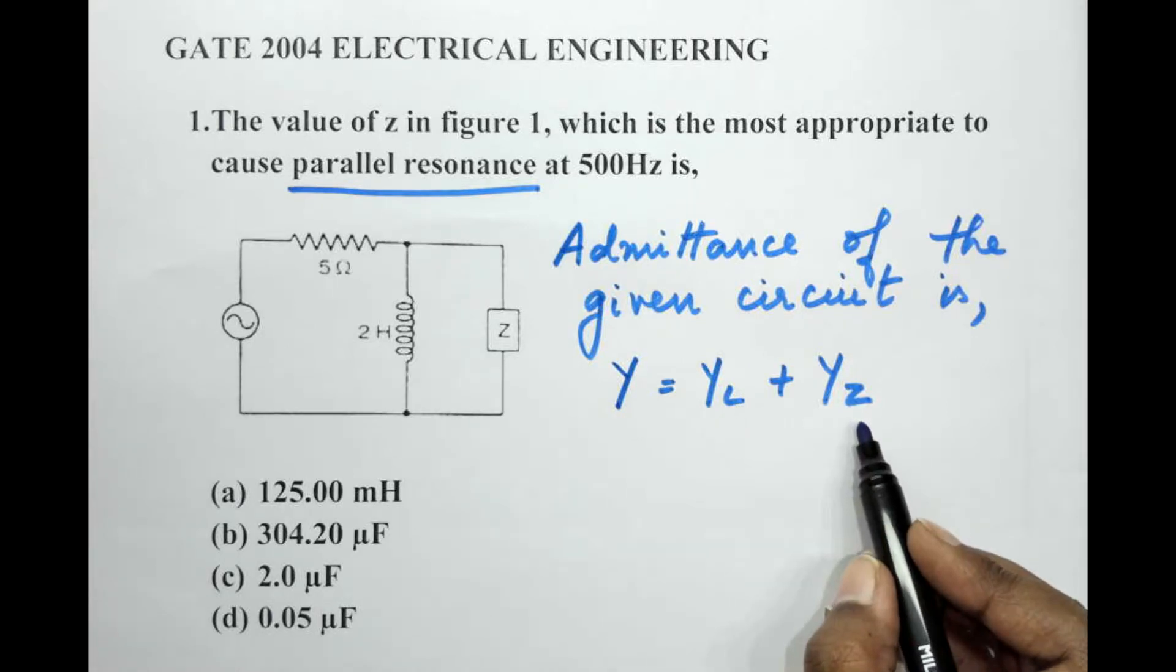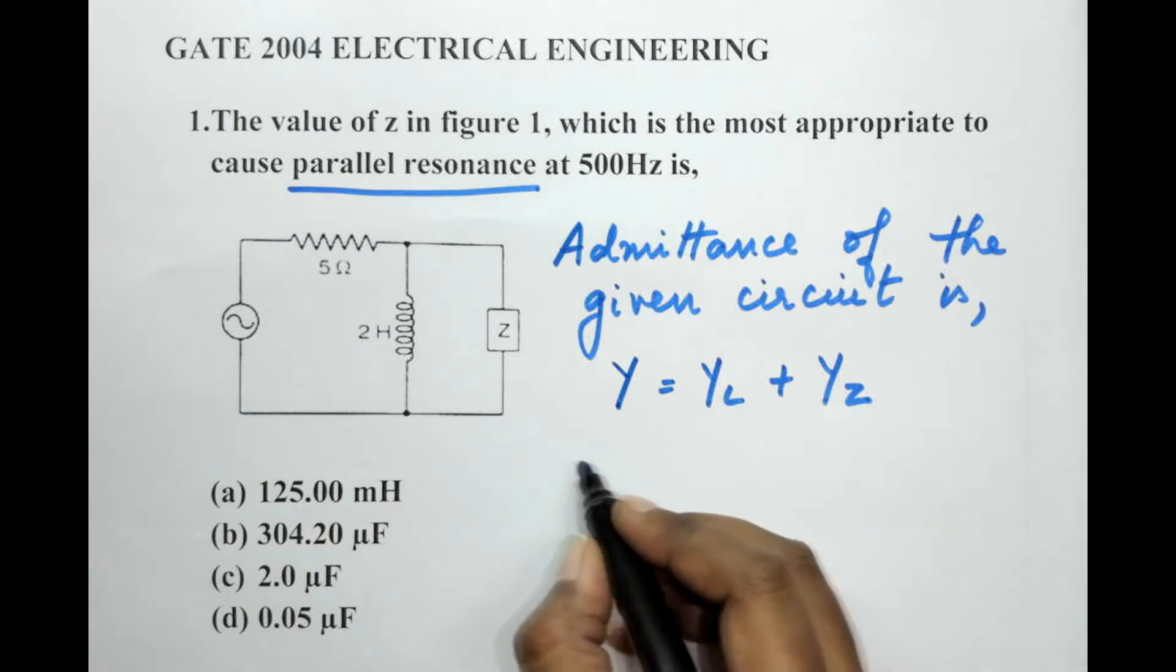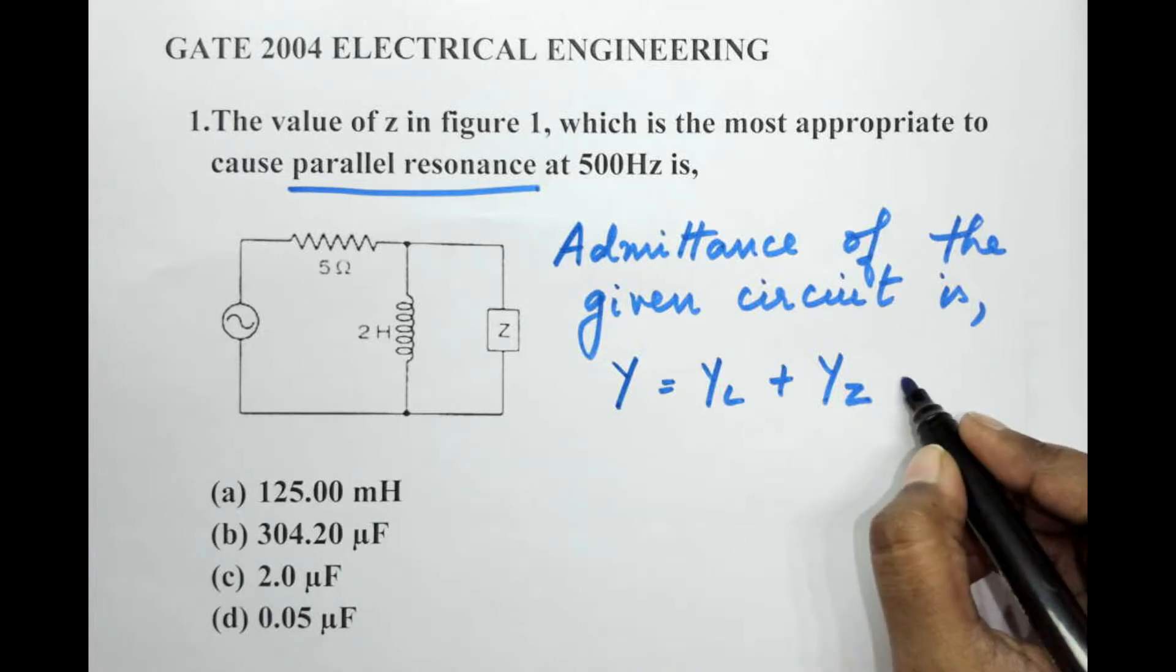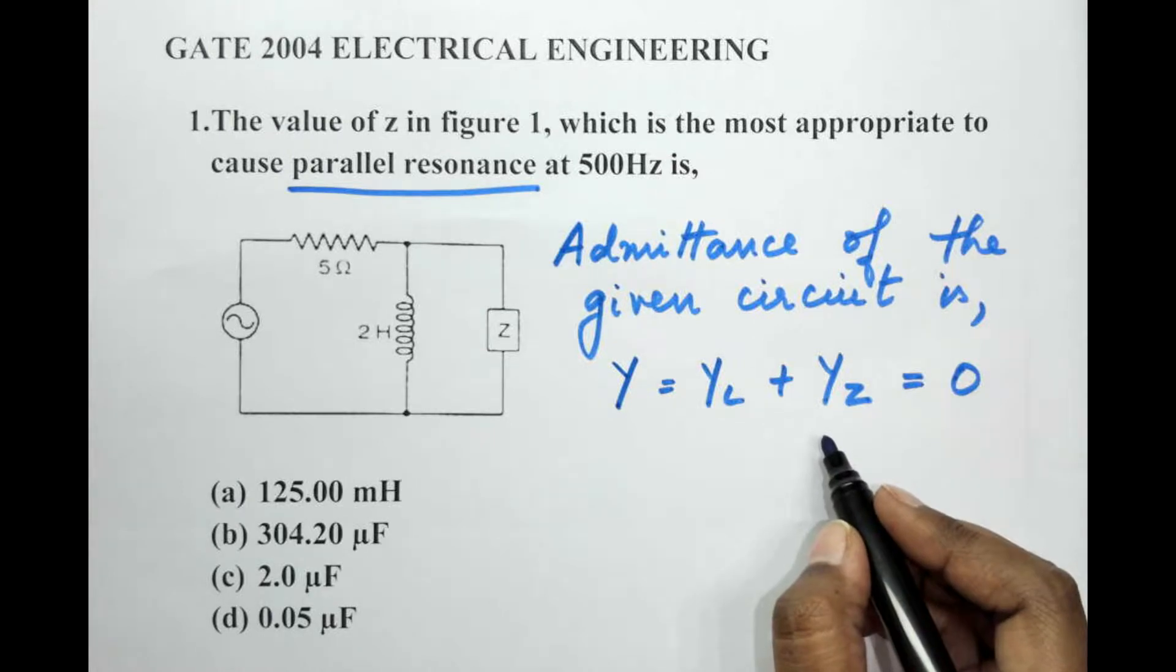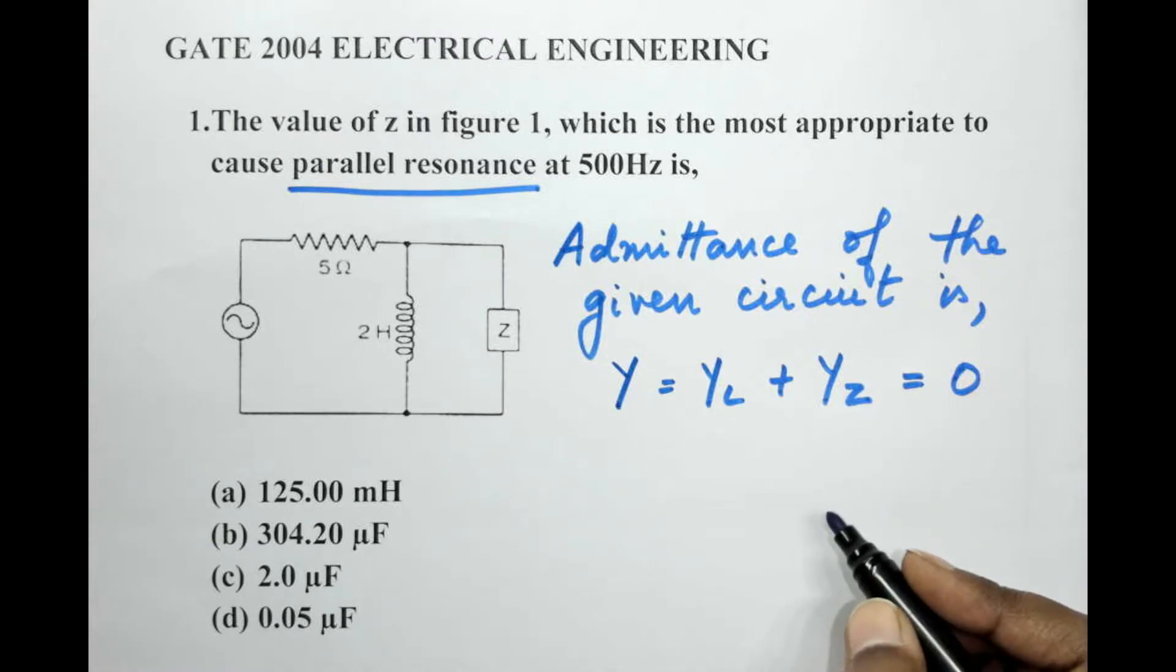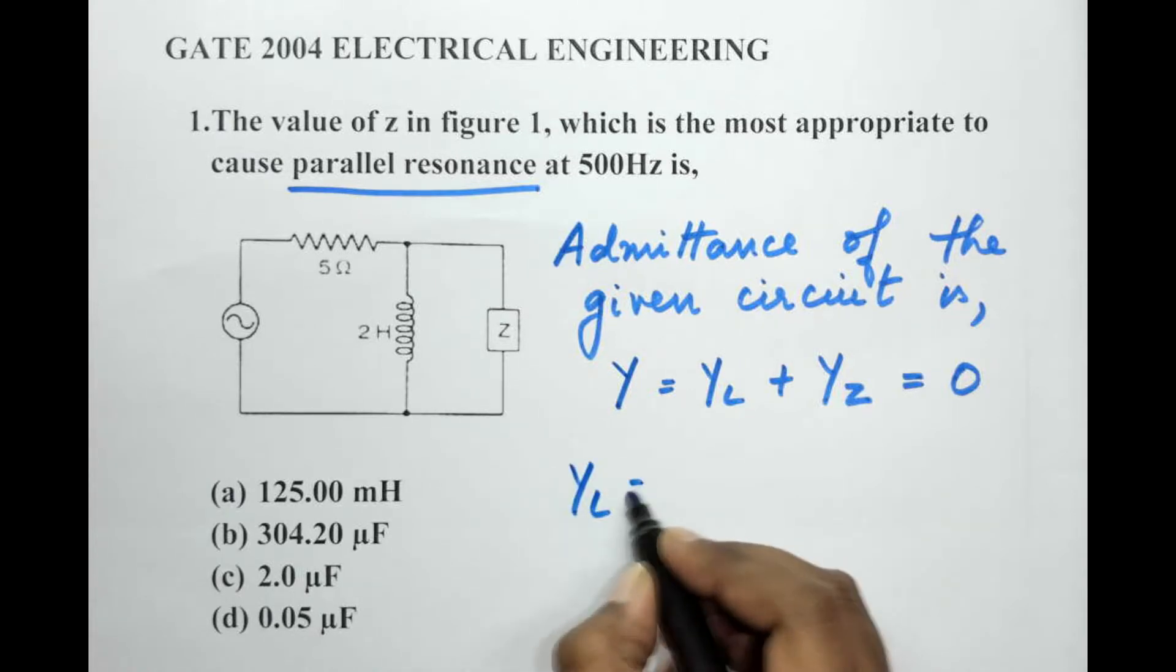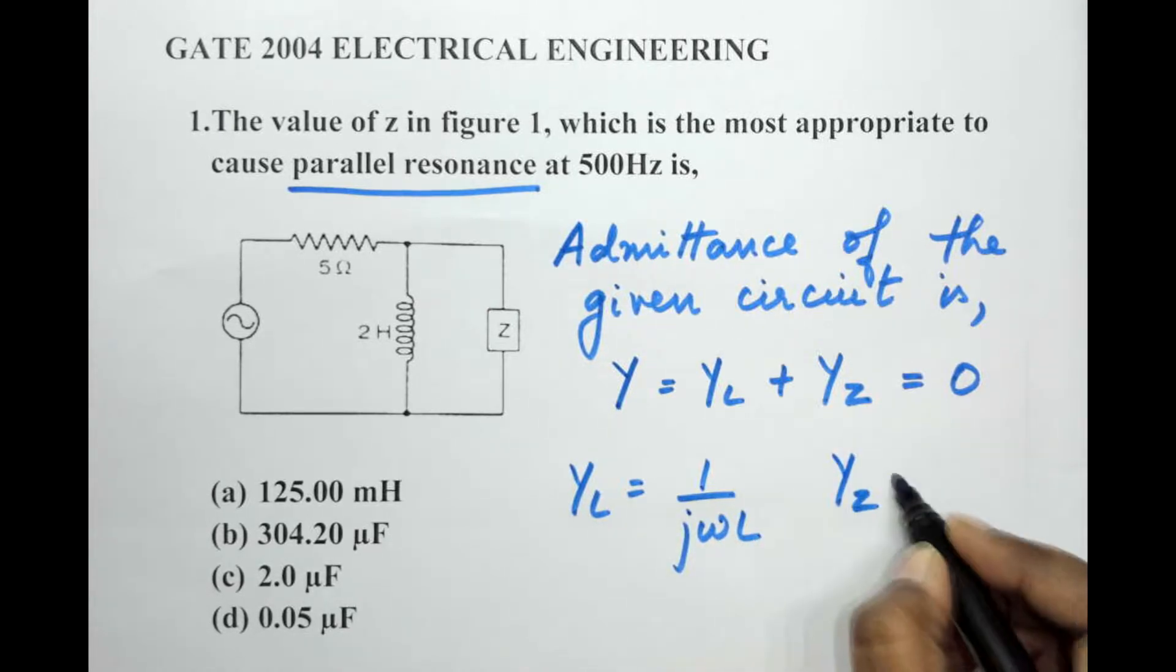Now at resonance I mentioned that the admittance is supposed to be minimum. So in that case YL plus YZ should be equal to 0. That's the only way the admittance of a circuit would be minimum. Now let's write down the expression for inductor admittance. YL will be written as 1 by jωL, and YZ can be written as 1 by Z which is equal to 0.